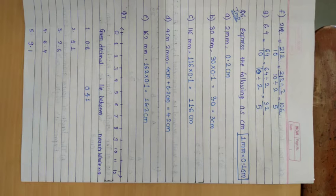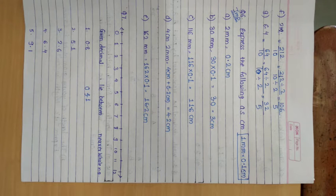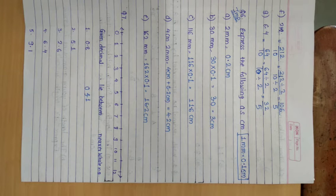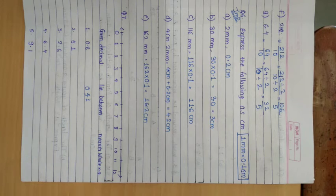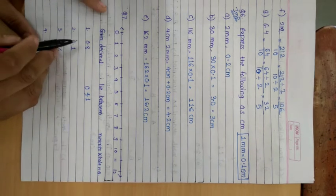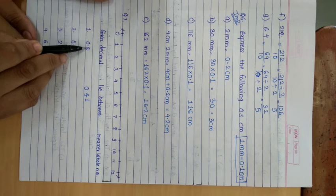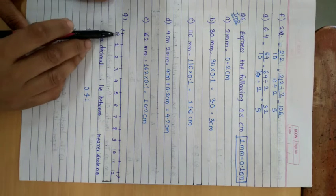We have discussed in an earlier topic that whole numbers start from 0. So 0, 1, 2, 3, 4 are the whole numbers. But when we start any group from 1, so 1, 2, 3, 4 are the natural numbers. So this 0.8 will lie between 0 and 1.